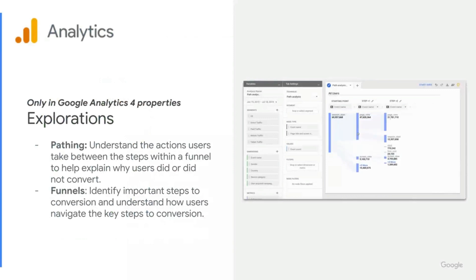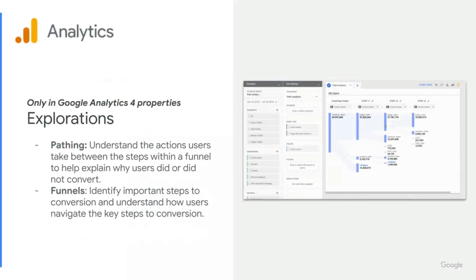Funnels identify important steps to conversion and help you understand how users navigate the key steps to those conversions. For a quick example of our funnel exploration, we can see here how users are succeeding going through each game level. So we have level one, level two, level three, all built out as individual steps within this funnel. And we can see how many users progressed along with their completion rates, abandonment rates, and so on.